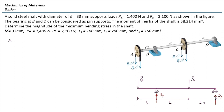Let's write down the sum of moments about D. Those two external forces, P_A and P_C, are rotating the element counterclockwise. So that would be P_A multiplied by the distance L1 plus L2 plus L3, plus P_C multiplied by the distance L3. This is equalized by the reaction force at B: B_Y multiplied by the distance L1 plus L2. Everything is given except B_Y, so we can solve for it.